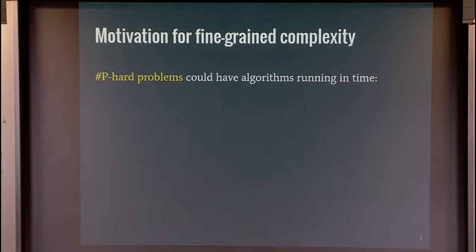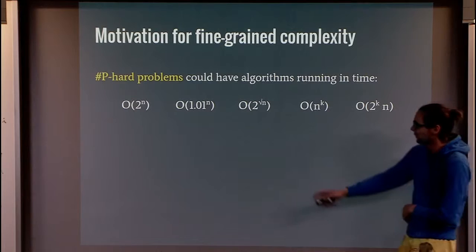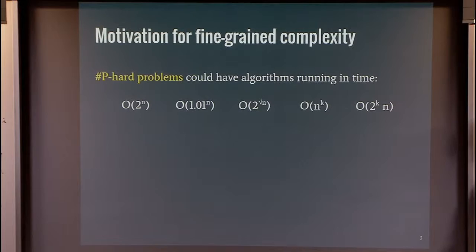So even if you have a problem that's Sharp-P hard, you could still want to solve it. There are different situations you could be in. The best running time could be 2 to the n, or even 200 to the n, or 1.01 to the n, which is maybe already very efficient for the instances you look at. Or you could have some parameter in your input that's very small, and the algorithm runs in time n times 2^k, or even 2^k times n. There's a very different range of possibilities.